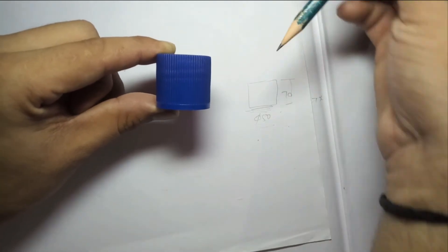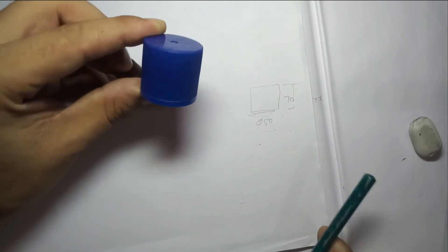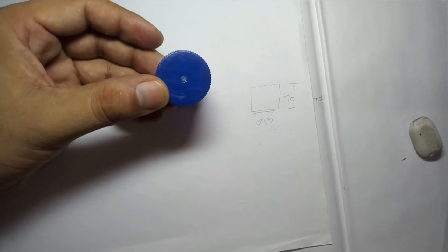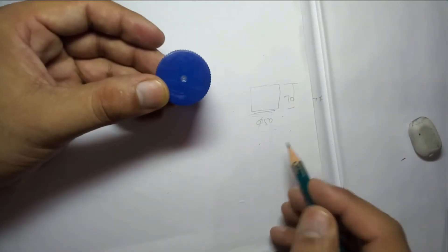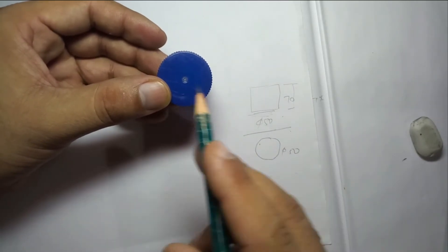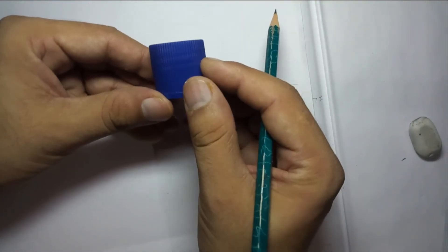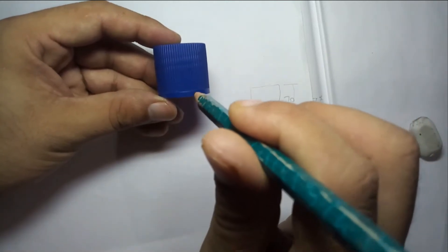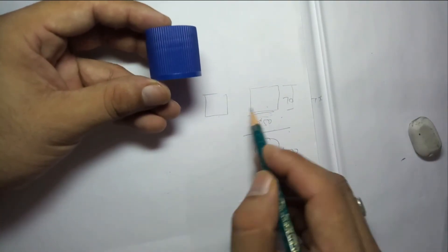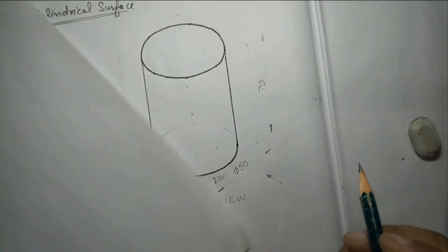To get the top view, rotate from the given front view direction. When you rotate, your eyes can see only a circle. So the top view of a cylinder is a circle with the diameter of the cylinder. For the side view, move to the front view — the side view will again be the same rectangle as the front view.